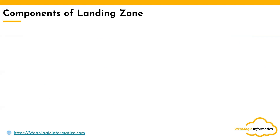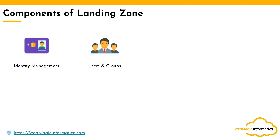Now let's talk about the main components that help you implement landing zone and gain these benefits. The first main component is identity management. Identity management means you will have one centralized identity source — such as Azure Active Directory, LDAP, or an on-premises Active Directory — where all your users' identities are created and then synchronized to your cloud account. For example, if you're using AWS you might synchronize it with AWS Identity and Access Management, so you don't need to recreate those users. You have one single source of truth for your users' identities.